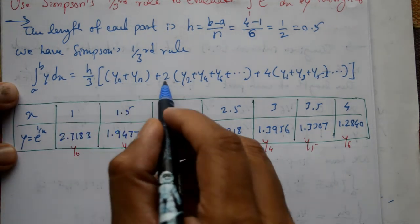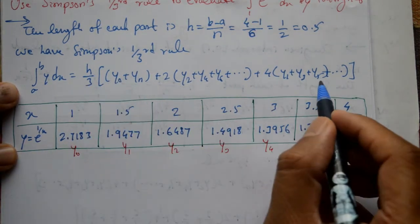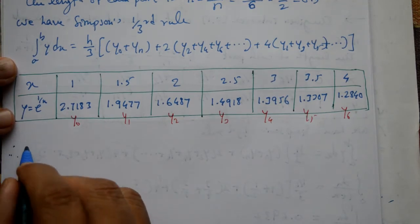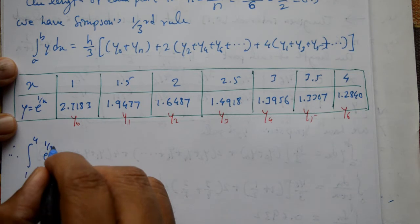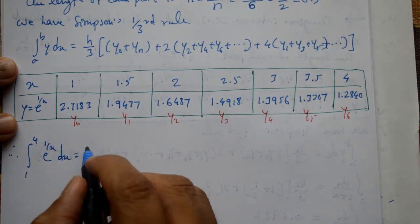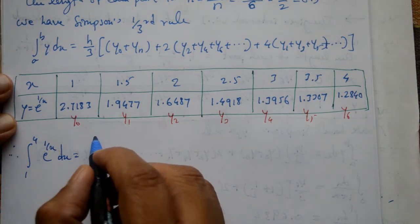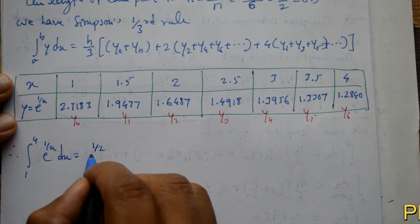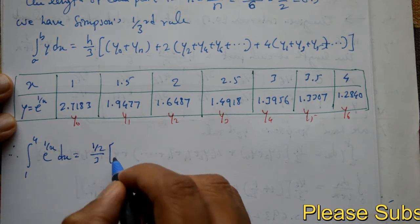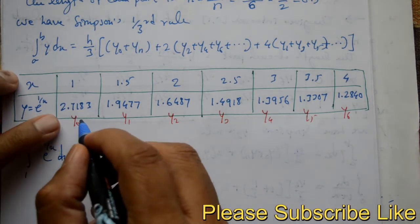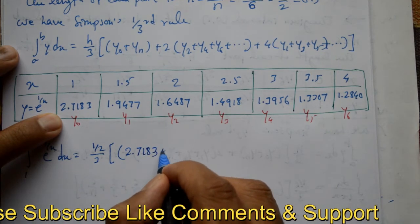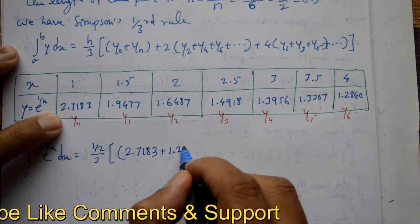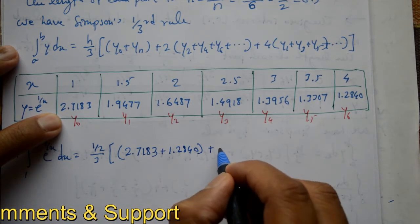So these values substitute here. Now therefore, integration of 1 to 4 e to the power 1 by x dx is equal to h by 3 hai, h kya hai, 1 by 2 or 0.5 hai. So e ho gaya 1 by 2 divided by 3 ho gaya, into y0 plus y1. So y0 first value hai, 2.7183 plus last value y1, 1.2840 hai.